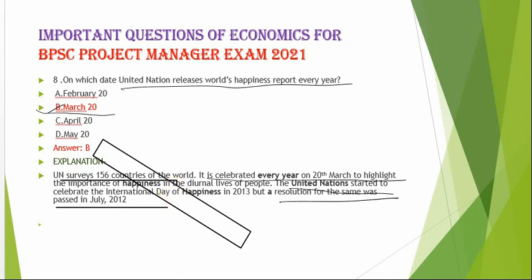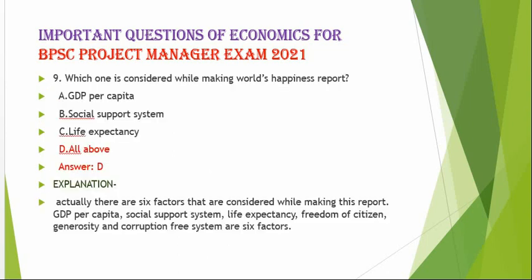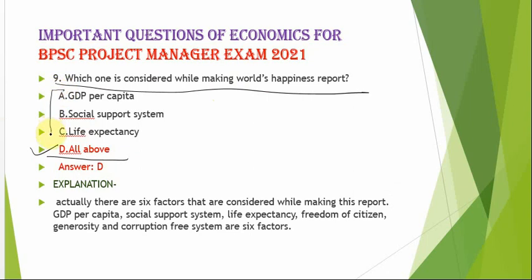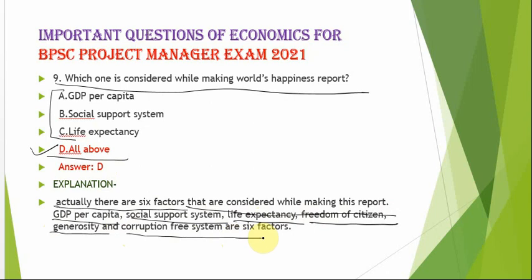The next question is: which factors are considered while making the World Happiness Report? The correct option is option D — all of the above. The six factors considered are: GDP per capita, social support system, life expectancy, freedom of citizens, generosity, and a corruption-free system.